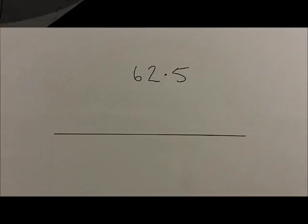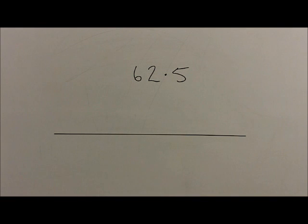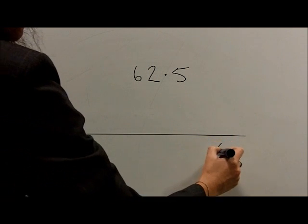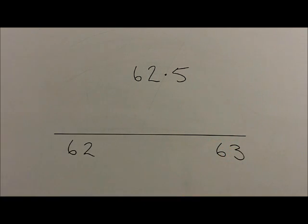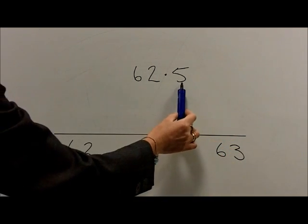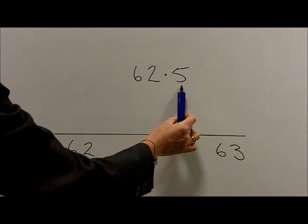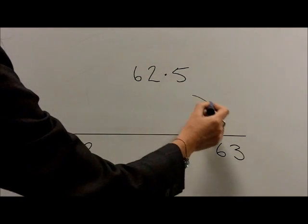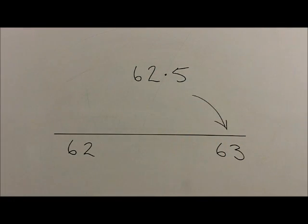With the number 62.5, the two whole numbers that 62.5 lies between are 62 and 63. Again, we look at the digit in the tenths to follow the rounding rules. With this number being 5, 62.5 rounds up to 63.